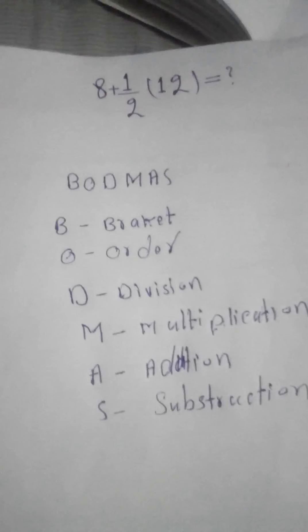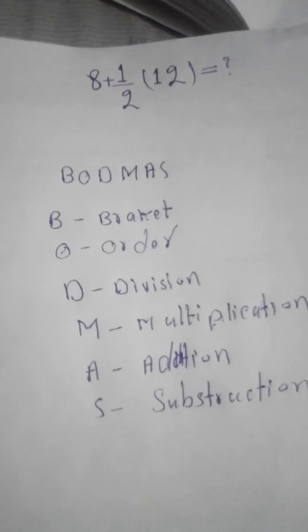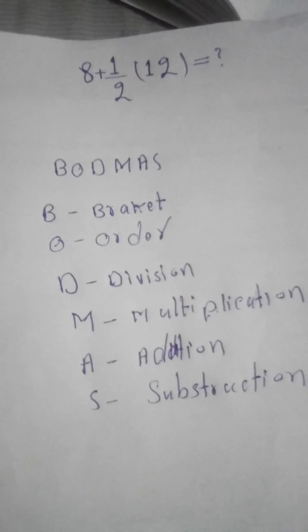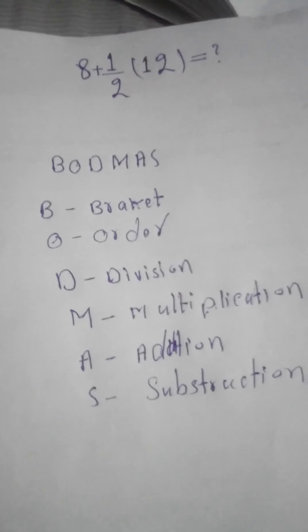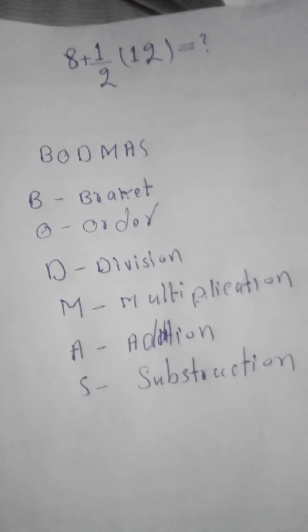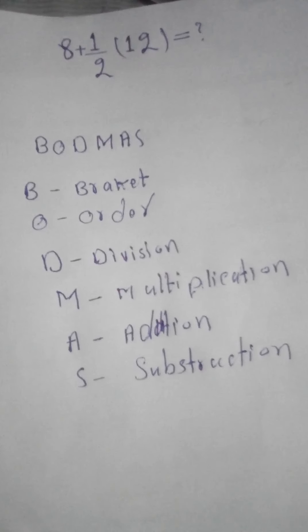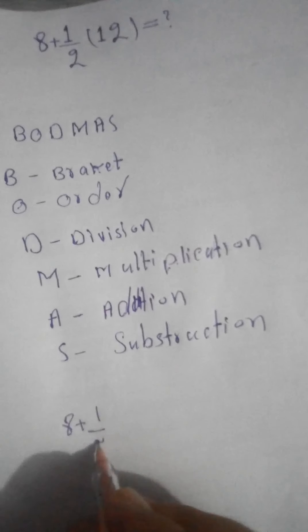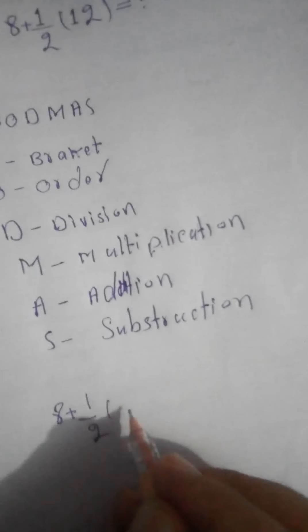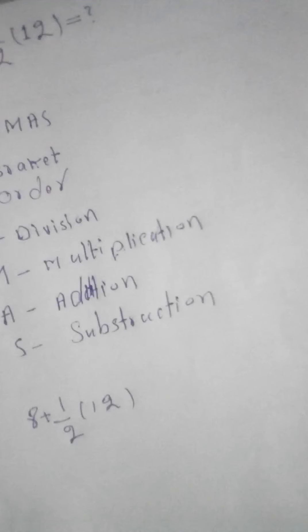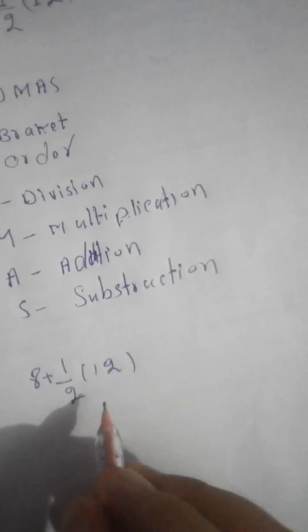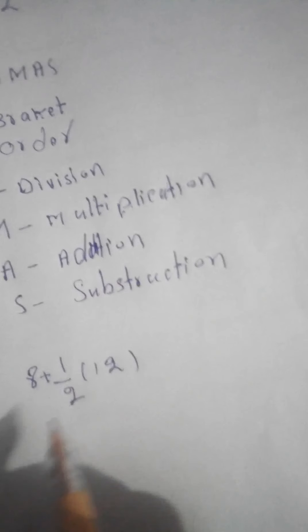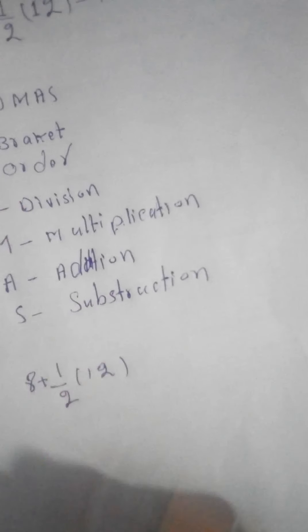So 8 plus 1/2(12). In this case we observe this whole tip. By observing this tip we can solve this. 8 plus 12/2. 12 divided by 2 is 6. 8 plus 6 is equal to 14.